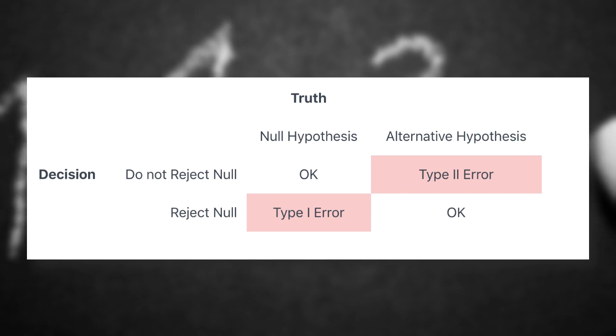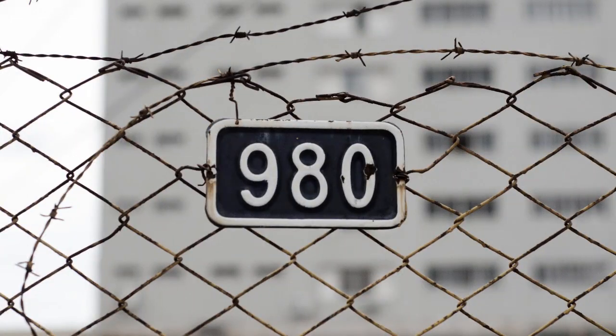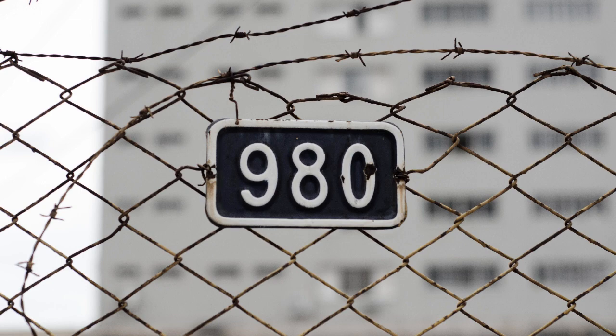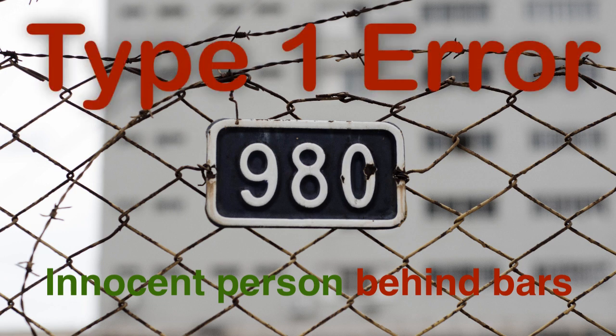These two types of errors are called the type one and type two errors respectively. Your question? Well, this is cool, but which one's worse? Type one or type two? And the answer to that is, well, it depends on the context. In our court example, it's better to treat a guilty person as innocent than lock an innocent person behind bars. So, the type one error for rejecting the null hypothesis when actually true can be catastrophic.